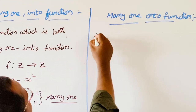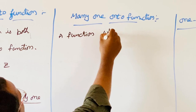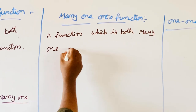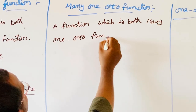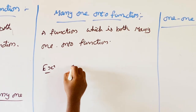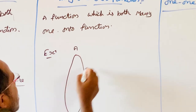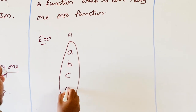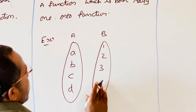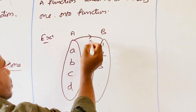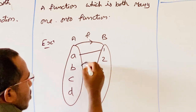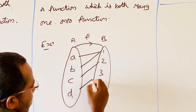Next is many-one onto function — a function which is both many-one and onto. For example, set A has elements a, b, c, d, and set B has elements 1, 2, 3. The function f maps: a to 1, b to 1, c to 2, and d to 3.